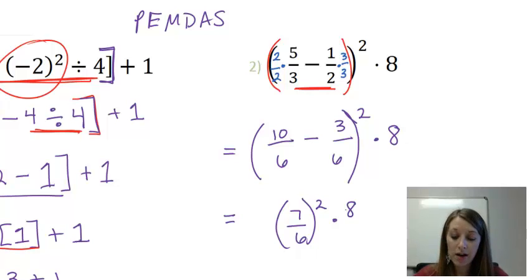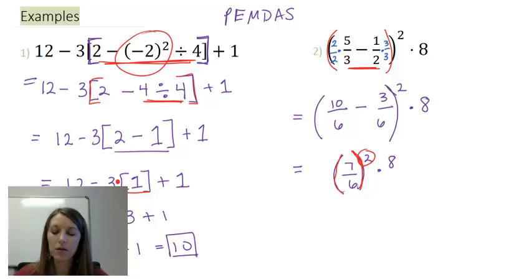So I do have parentheses left here, but inside this parentheses, I can't really do anything because my division doesn't come out evenly. So I'm going to move on to my next step, which is exponents. We know we can take fractions to an exponent by squaring each piece, both the numerator and the denominator. So 7 squared gives me 49, over 6 squared gives me 36, times 8.